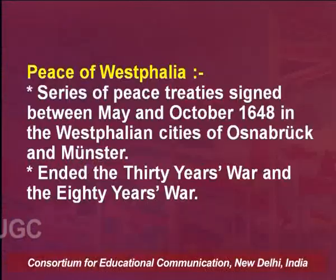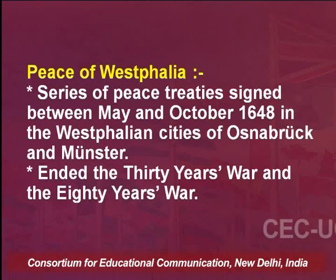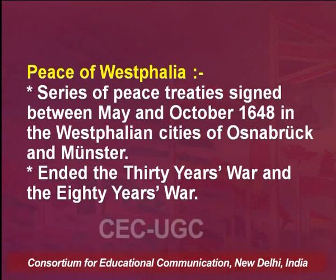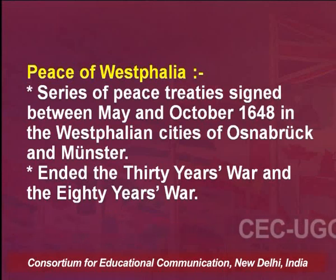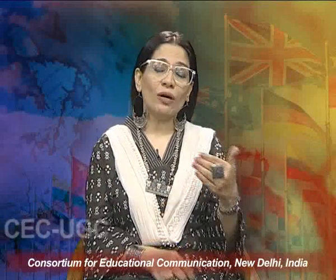What do we mean by the Treaty of Westphalia or the Peace of Westphalia? When we look at world history, the Peace of Westphalia signifies a series of peace treaties signed between May and October 1648 in the Westphalian cities of Osnabrück and Münster. The Peace of Westphalia is significant as it ended the Thirty Years' War and the Eighty Years' War. The negotiations therein are often called the Congress of Westphalia.